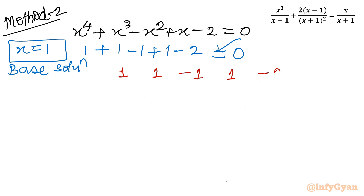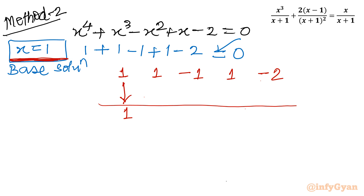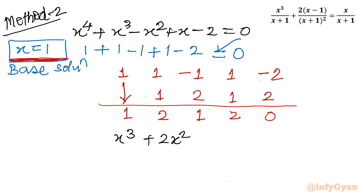Writing all the coefficients: 1, 1, −1, 1, −2. Performing synthetic division with base solution x = 1, the leading coefficient is brought down as 1, then computing products: 1, 2, 1, 2, giving remainder 0. The resulting coefficients give us the cubic equation x³ + 2x² + x + 2 = 0.